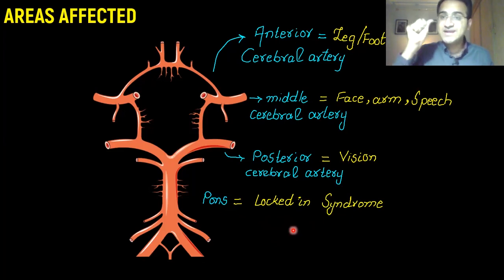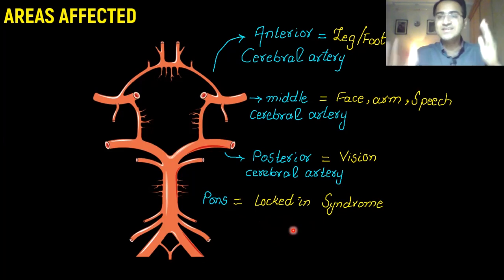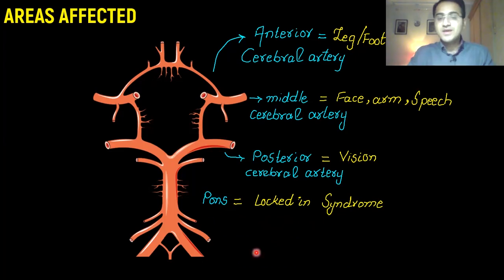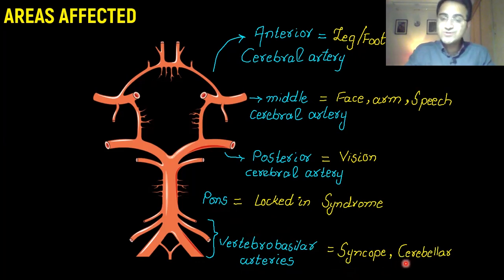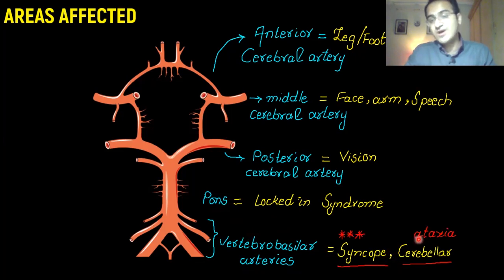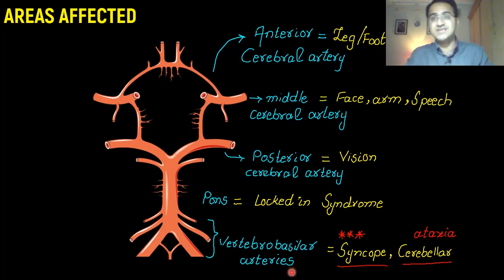Damage to the pons results in locked-in syndrome, in which the whole body is paralyzed except the eyes, which retain intact vertical movement. Other than that, the whole body is locked in itself. If vertebrobasilar arteries are affected, the main symptom is syncope, and since the cerebellum is also supplied by the vertebrobasilar artery, the patient will have ataxia — syncope and cerebellar symptoms point toward vertebrobasilar artery damage.